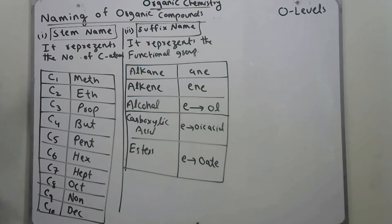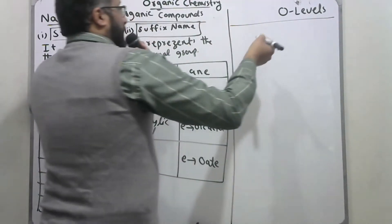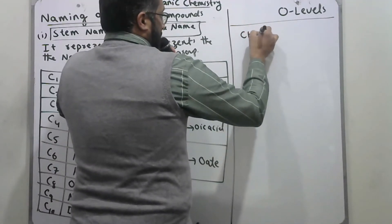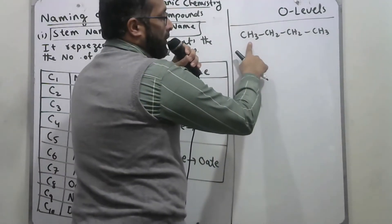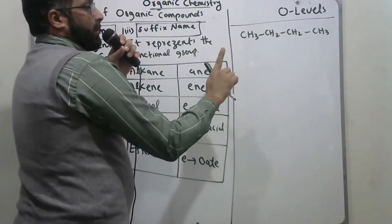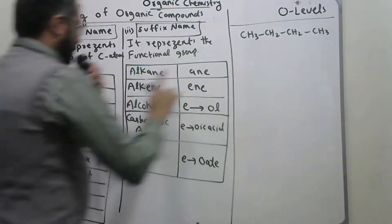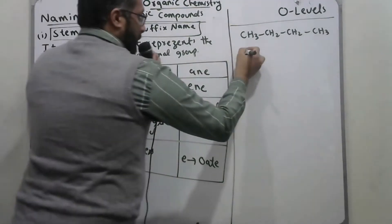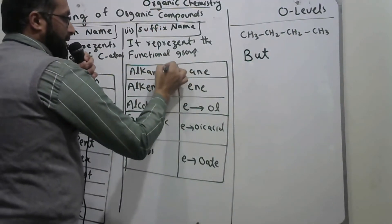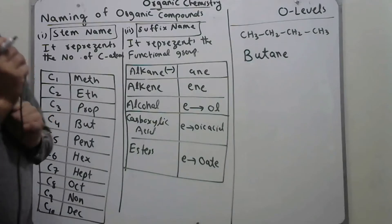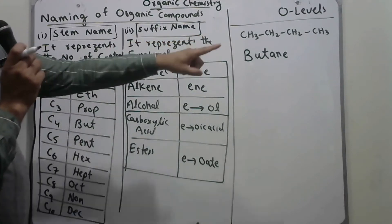We take some examples to clear the concepts. For example, for the compound CH3-CH2-CH2-CH3, to write the name we count the carbon atoms only, not the hydrogens. This compound contains 4 carbons (1, 2, 3, 4). For 4 carbons the stem is 'but', and since there is a single bond representing alkanes, we write 'butane'.